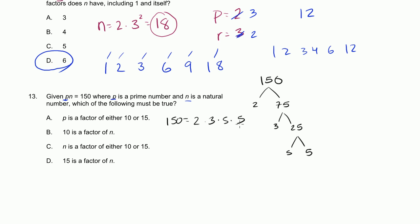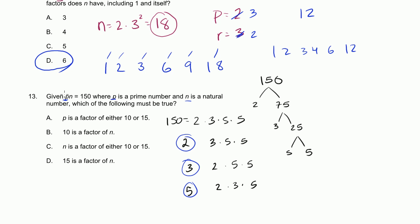So p could be any of these prime factors. If p were 2, then n would be 3 times 5 times 5. If p were 3, then n would be 2 times 5 times 5. If p were 5, then n would be 2 times 3 times 5. Now let's look at the choices. One choice says p is a factor of either 10 or 15. Well, 2 is a factor of 10, 3 is a factor of 15, and 5 is a factor of both 10 and 15. So that looks like the correct answer.